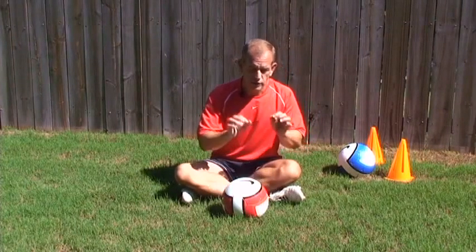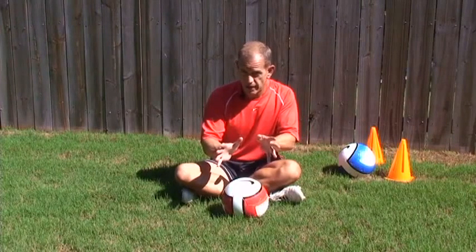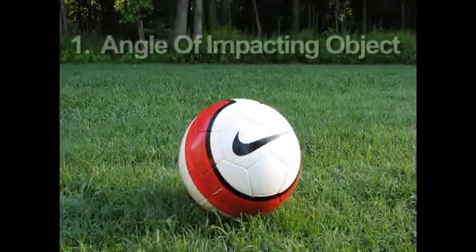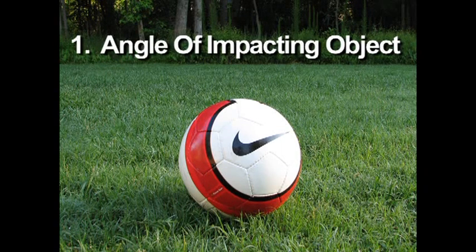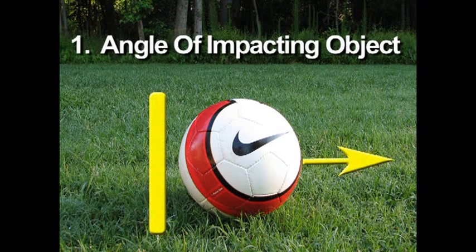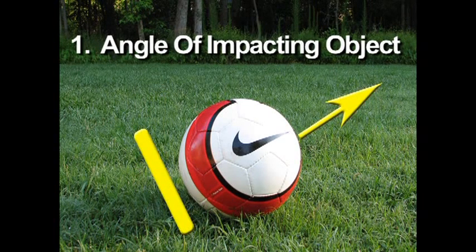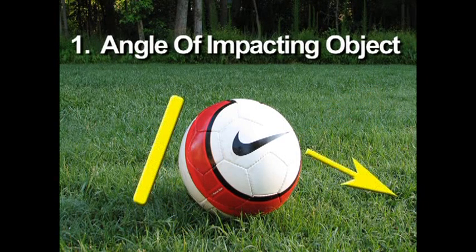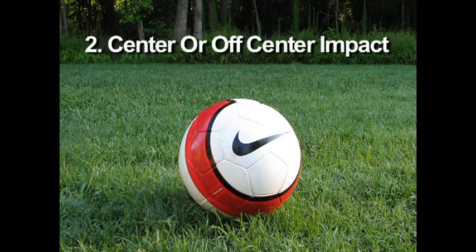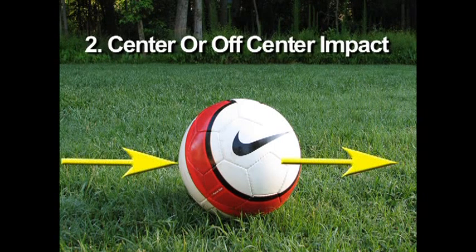Understand these three things and you will be able to apply them to almost every kick you have. Number one is the angle of the impacting object. Think about this like different golf clubs — the more upward angle on a golf club, the higher the ball will go. If the ball is struck with a flat object, it goes straight. If struck with an object facing upward, the ball goes up, much like a pitching wedge in golf. If struck with a downward-facing object, the ball will go down.